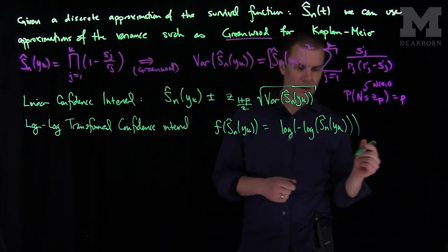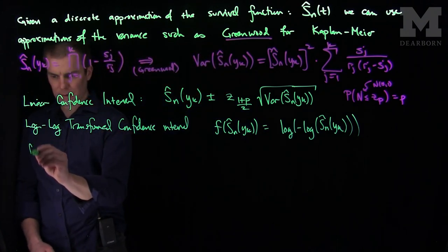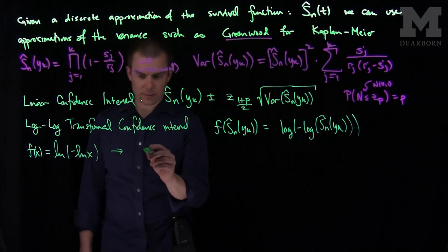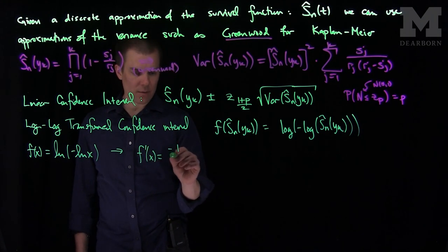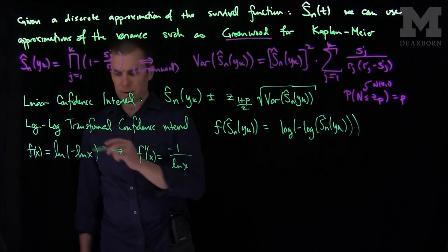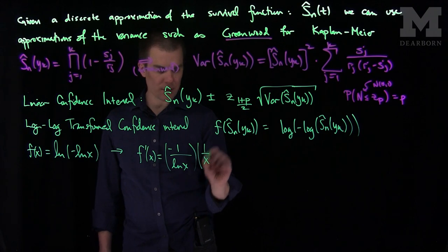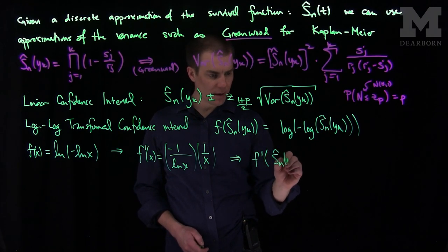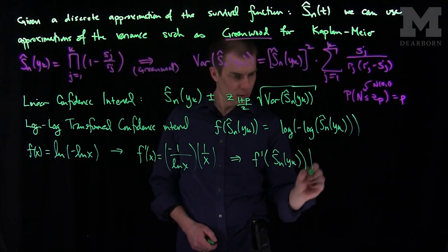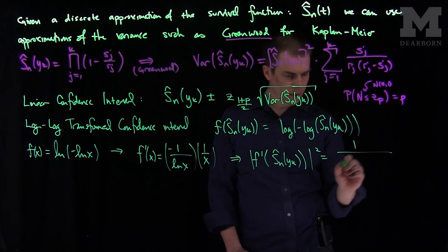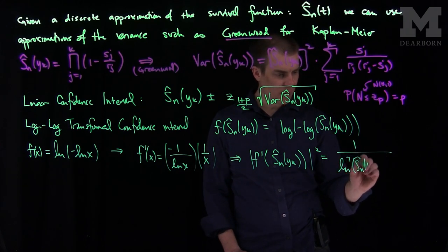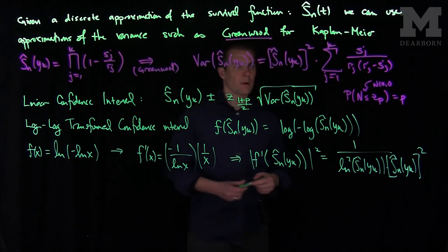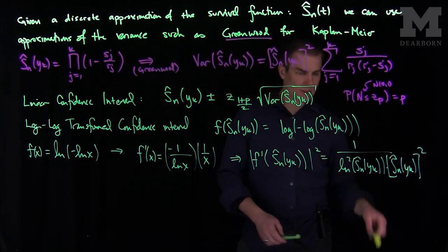If f of x is the log of the negative log of x, then f prime of x will be negative 1 over log(x), times the derivative of log(x) which is 1 over x — so this quantity times 1 over x. With the delta method you square this. So f prime of Sn hat of yk, quantity squared, will be 1 over log squared of Sn hat of yk, times Sn hat of yk quantity squared. This tells us the variance contribution from the delta method.